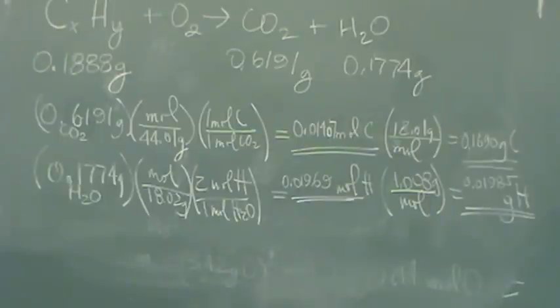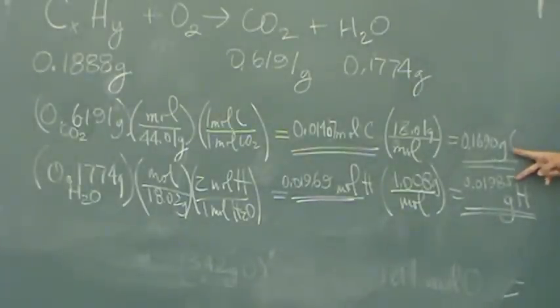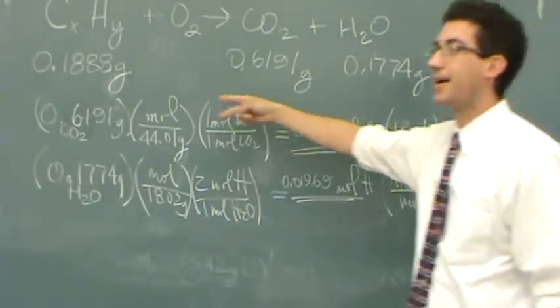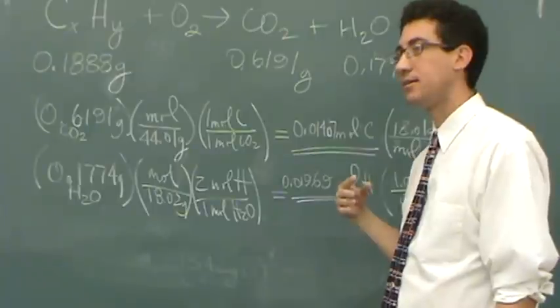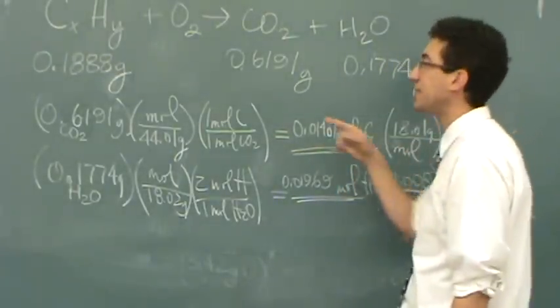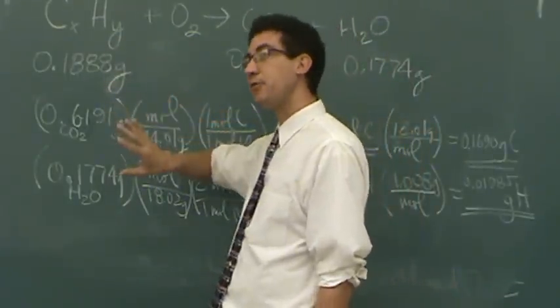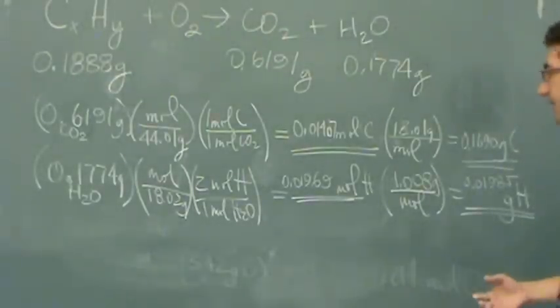Now I can just check, but what should these two numbers add up to right here? 0.1888. Yeah, you got it. It looks like that's right. What does that mean? That there's no oxygen. There's no oxygen in there. Yeah, I've just confirmed. Now if these two numbers didn't add up to this number, the leftover mass is the oxygen in the molecule.